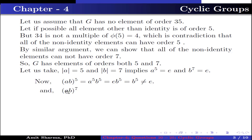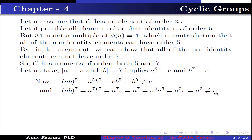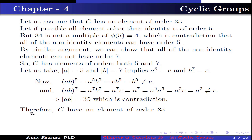Now (ab) to the power 7 equals a to the power 7 times b to the power 7, which equals a to the power 7 times identity, which equals a to the power 7, which equals a squared times a to the power 5, which equals a squared, which is not equal to identity. This implies order of ab is not equal to 5 and not equal to 7. Therefore order of ab must be 35, contradicting our assumption. Hence G has an element of order 35, and G is a cyclic group.